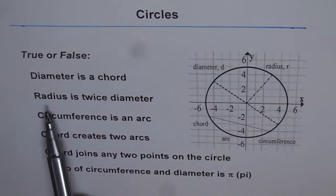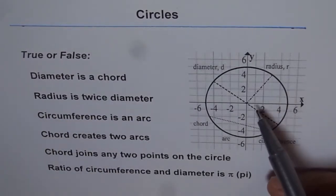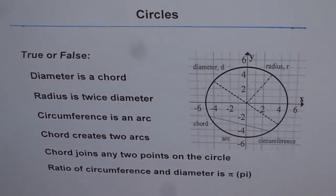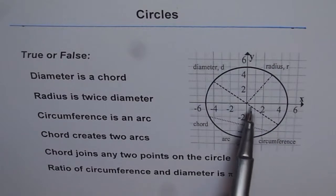Radius is twice diameter. Radius is from center to the circumference, and diameter is from one end to the other going through the origin.